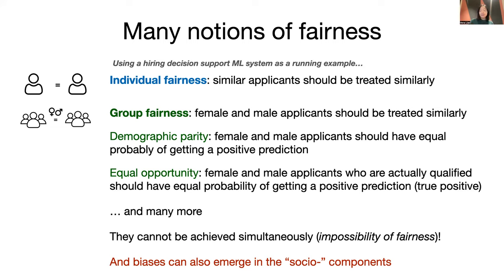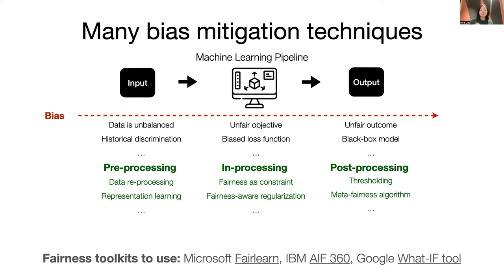It is also important to note that biases are not just embedded in the model — they can also emerge in the social components, such as how people interact with the system. For example, we must also consider how male and female applicants may have different patterns in clicking on and getting recommendations for different jobs. On the technical side, another focus is developing bias mitigation techniques. They can be applied to the data at a preprocessing stage, to the algorithm in-processing while training a model, or to a trained model post-processing.